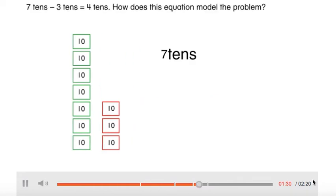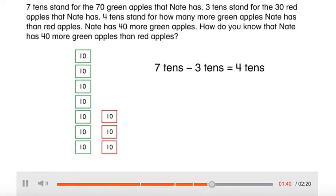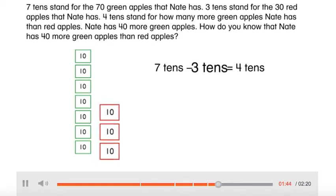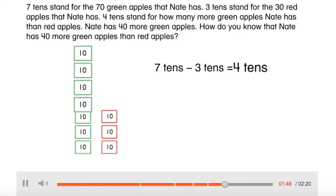Seven tens minus three tens equals four tens. How does this equation model the problem? Seven tens stand for the 70 green apples that Nate has. Three tens stand for the 30 red apples that Nate has. Four tens stand for how many more green apples Nate has than red apples.